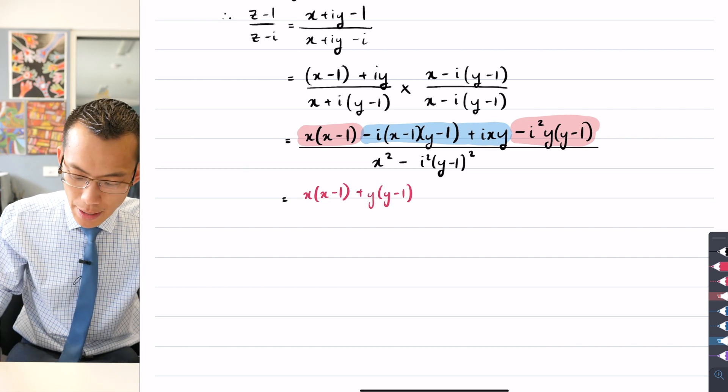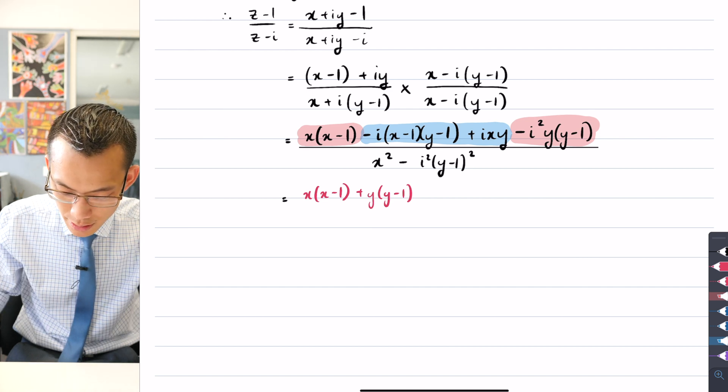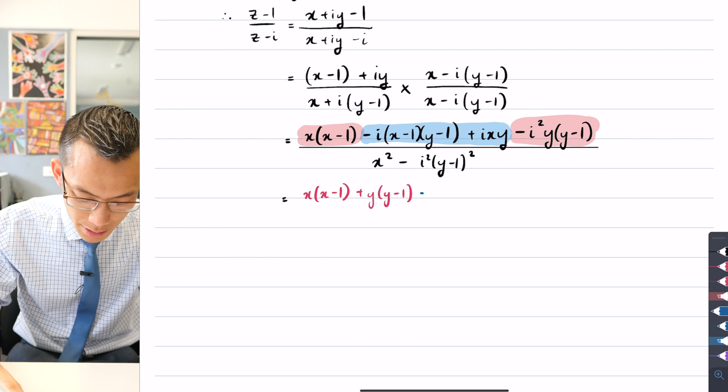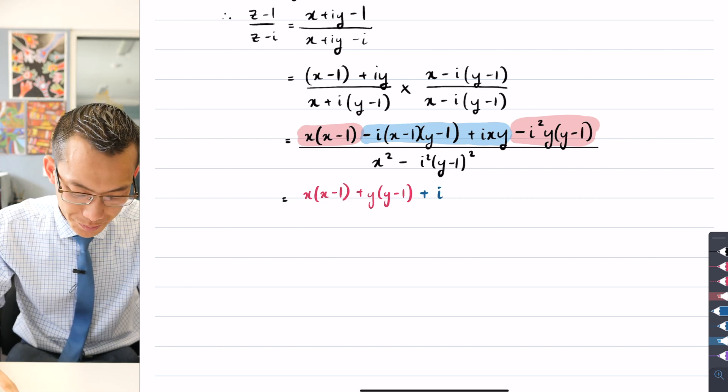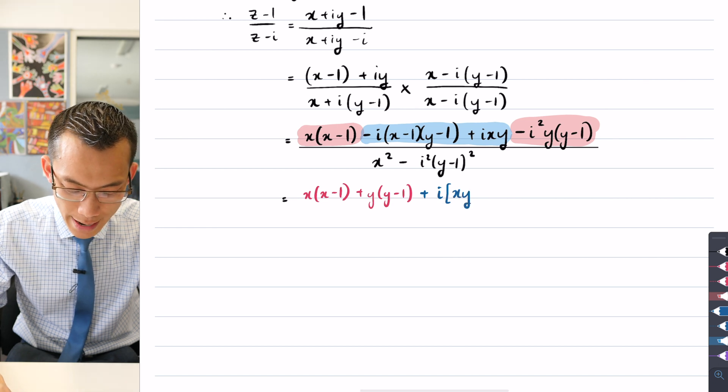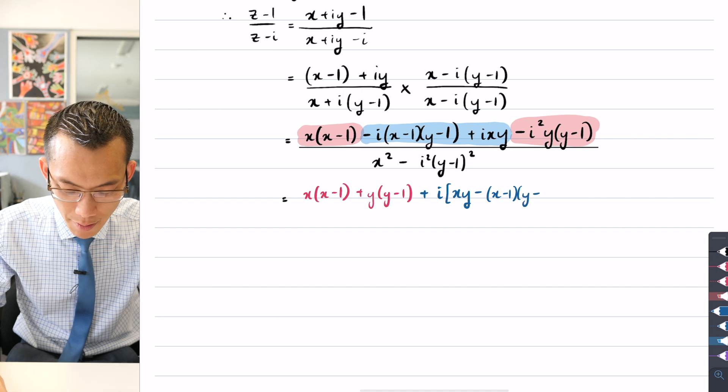And then as I move across to the right, you can see I'm going to factorize out i, and that leaves me with, let's have a look at what's inside the brackets, I've got xy take away (x - 1)(y - 1).